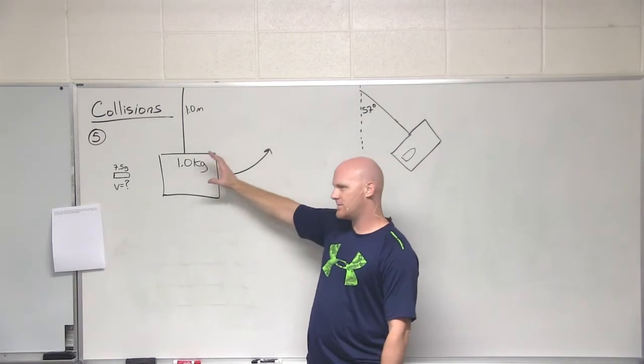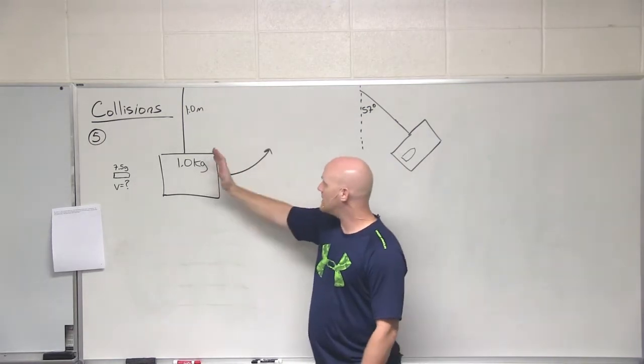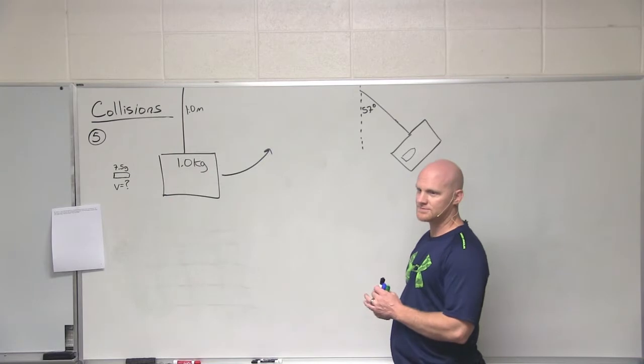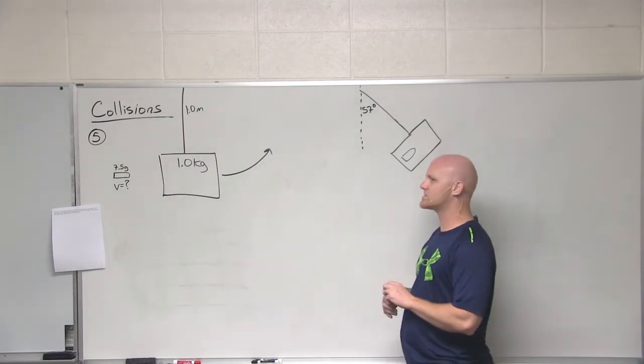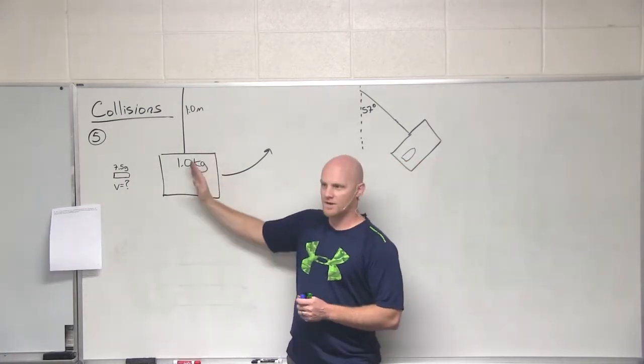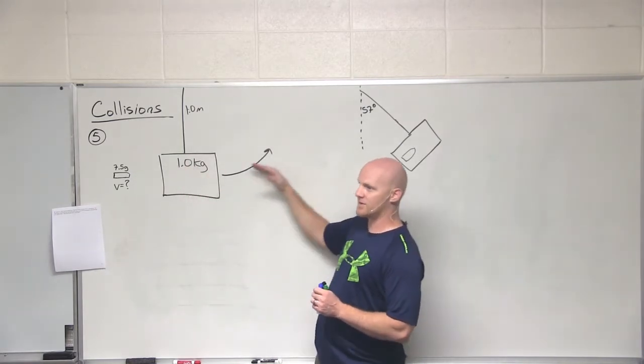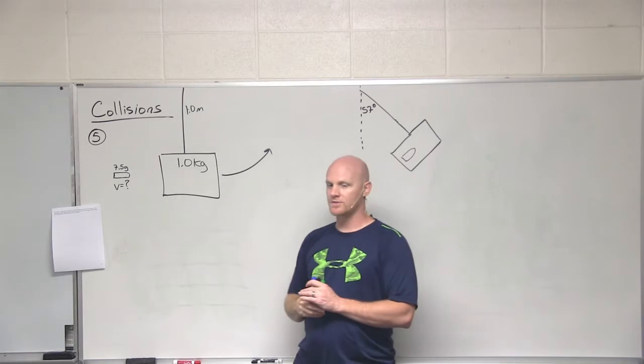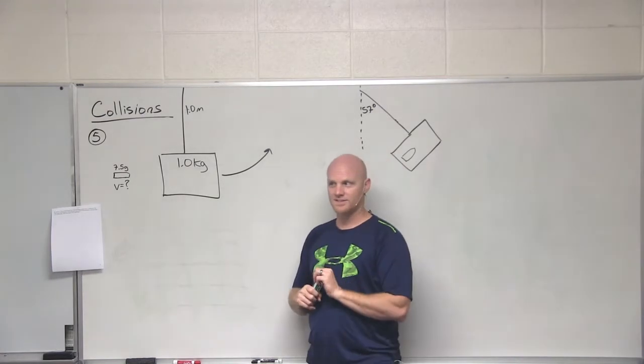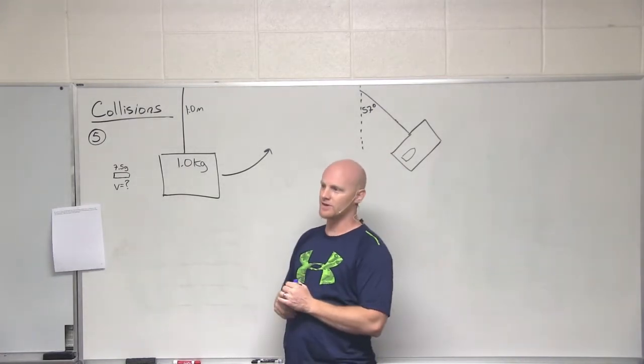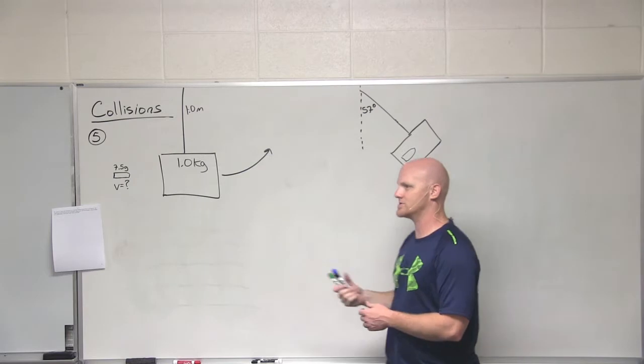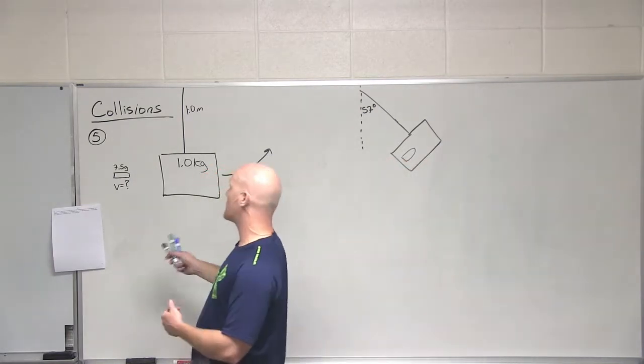But after that collision happens, we have conservation of momentum. Then this block is going to swing up to this maximum of 57 degrees. So what do we have going on there? Transfer of energy. What kind of energy does it have when it first, after the bullet lodges in there? Kinetic. But it's getting converted into potential. And assuming no non-conservative forces, conservation of mechanical energy. So that's how we're going to treat this. So two-part problem. We'll deal with the collision, then we'll deal with this conservation of mechanical energy.